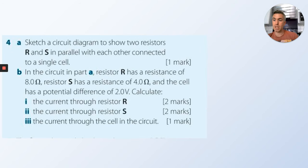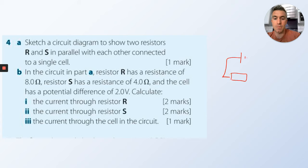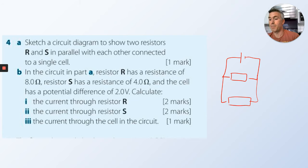Sketch a diagram to show two resistors R and S in parallel with each other and a single cell. R has a resistance of 8 ohms and S has a resistance of 4 ohms, with a potential difference of 2 volts.